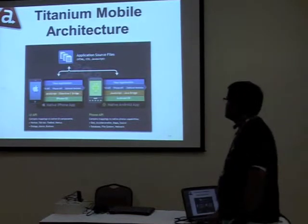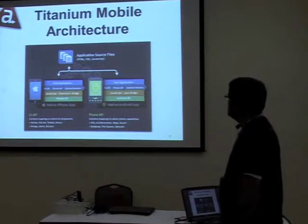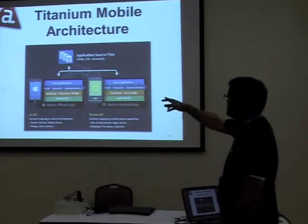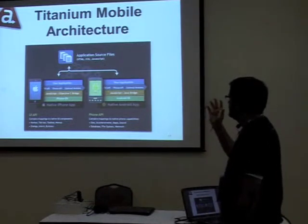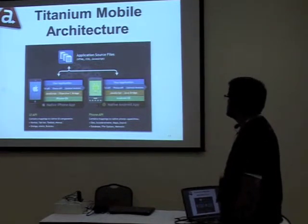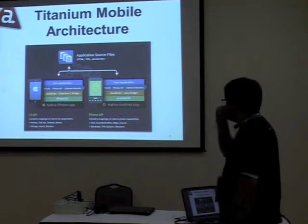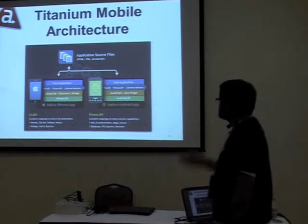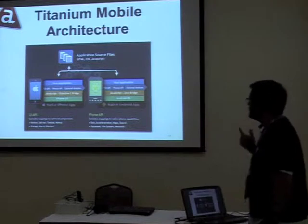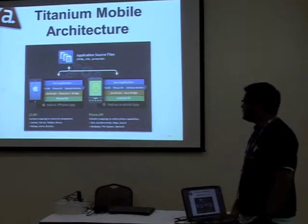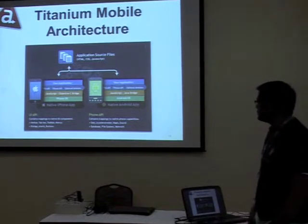The mobile architecture: your application sits on top as all HTML and JavaScript code, then there are the wrapper APIs — UI API, phone API, optional modules — there is a bridge for Java, a bridge for JavaScript, and then the native OS below that. To give you an example of the UI component mapping, there are wrappers for nav bar, tab bar, and most standard UI components you'll find on both platforms.